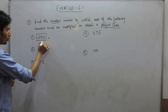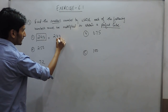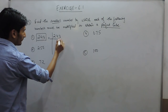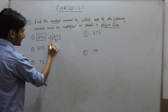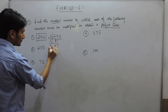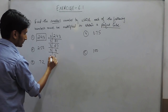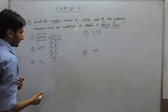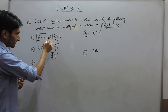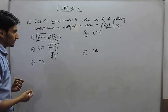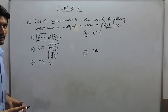First of all we have to prime factorize the number 243. When divided by 3 it is 81. Again by 3 it is 27. Then 3 gives 9, and 3, 3, and 3 gives 1. So when we see here, there is a group of 3, and in this group one 3 is missing.